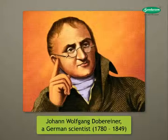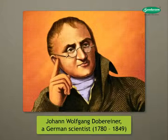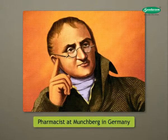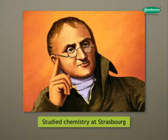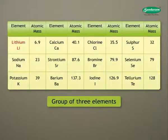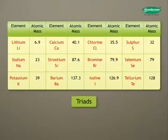Johann Wolfgang Dobereiner, a German scientist from 1780 to 1849, studied as a pharmacist at Munchberg in Germany and then studied chemistry at Strasbourg. In 1829, he found some groups of three elements which show similar properties.